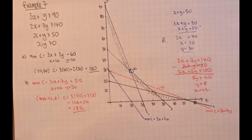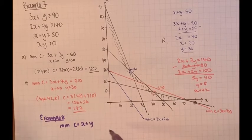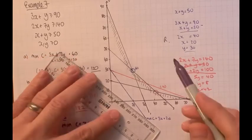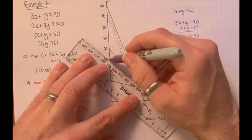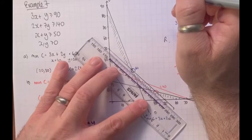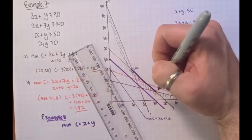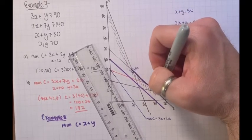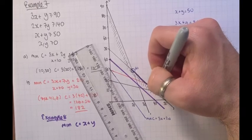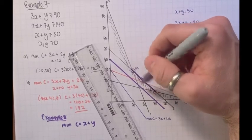Example 8 uses the same graph but minimises C equal to X plus Y. The objective line is parallel to the constraint line X plus Y equals 50. This means the solution is anywhere along that line between the two intersection points — so anywhere from X is 20 to approximately X is 42, anywhere along that segment gives a minimal solution.